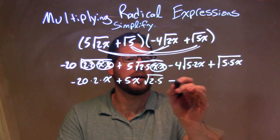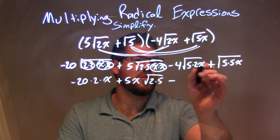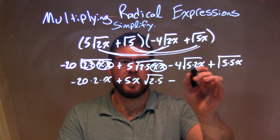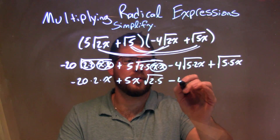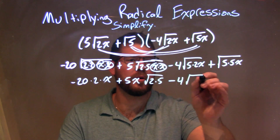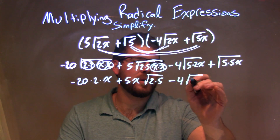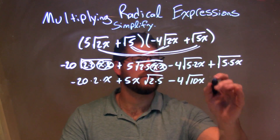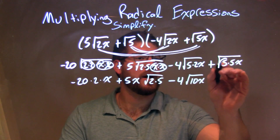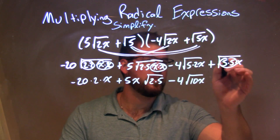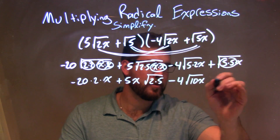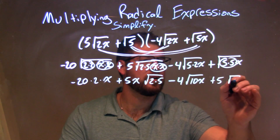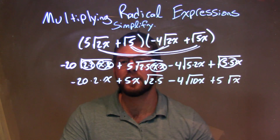For the minus 4 term, there are no pairs — no pairs among the 5, 2, or x's — so we leave it as minus 4 times the square root of 10x, since 5 times 2 is 10. Lastly, we have a pair of 5's, so a single 5 comes to the outside, and we're left with a single x on the inside.